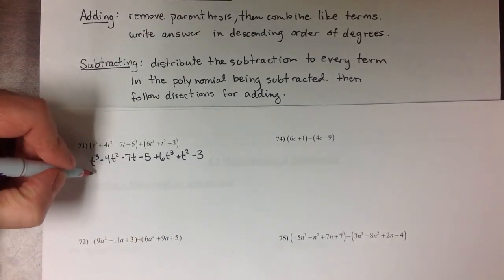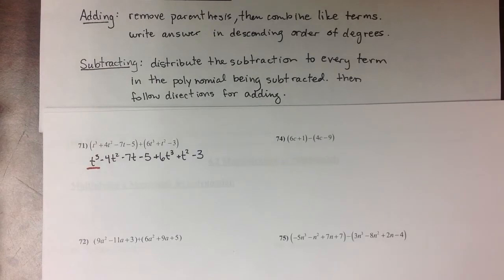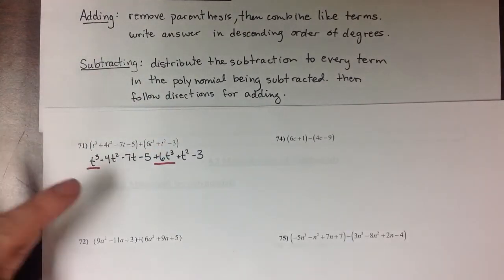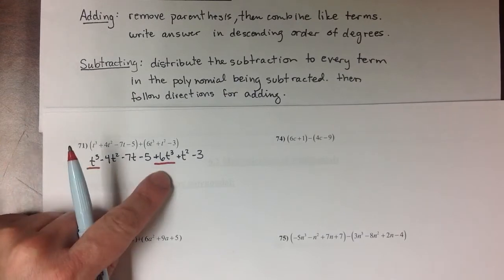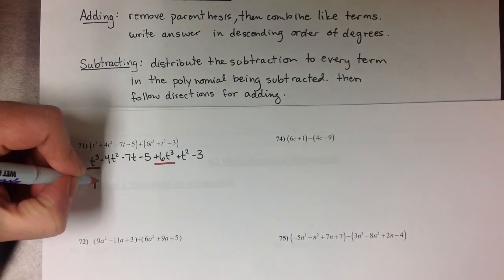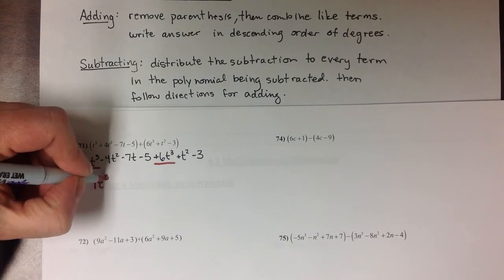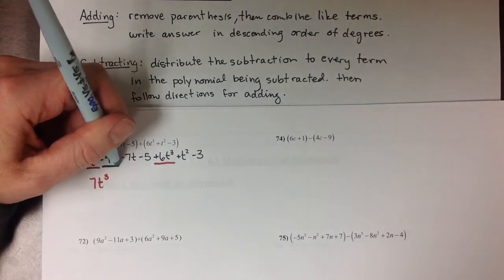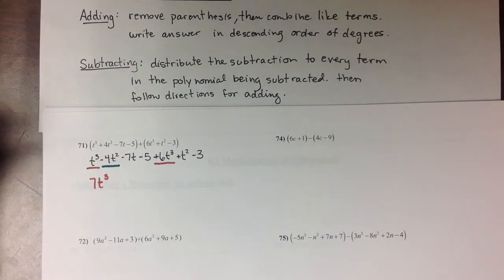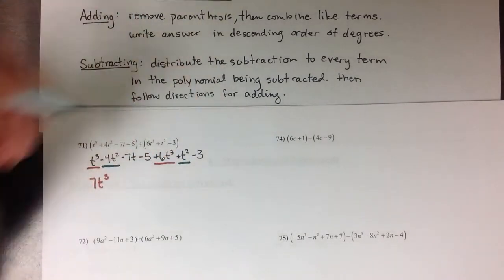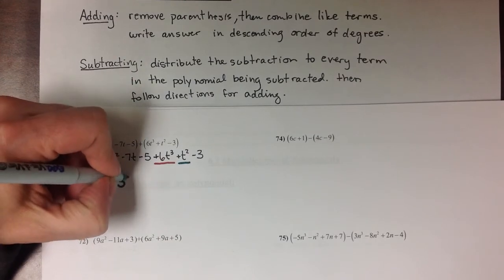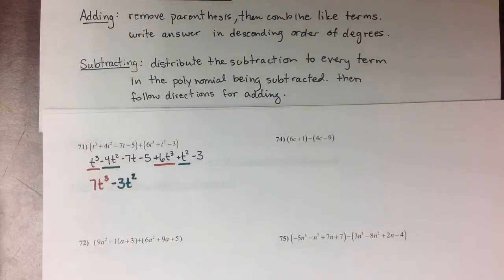So in this first polynomial, I have a t³ here and another t³ there. So t³ plus 6 more t³ is going to give me a total of 7t³, or t cubed. For the t² terms, I have a -4t² and a positive t². So when I combine those, I'm going to get a -3t².